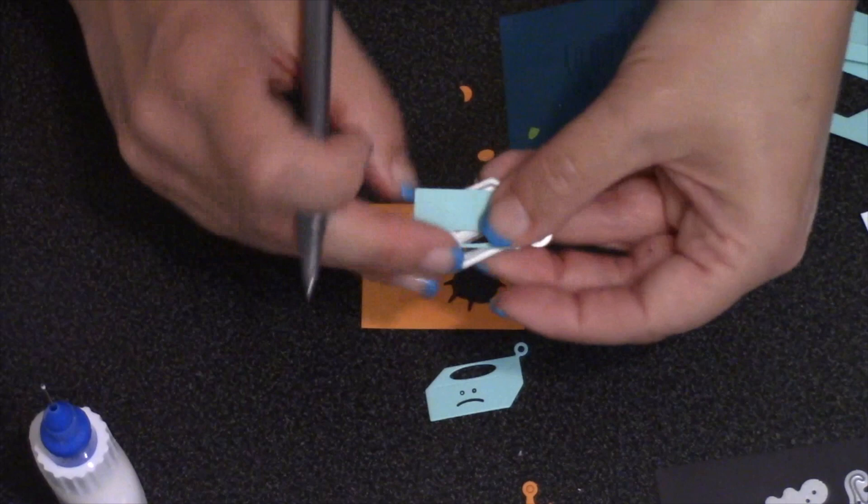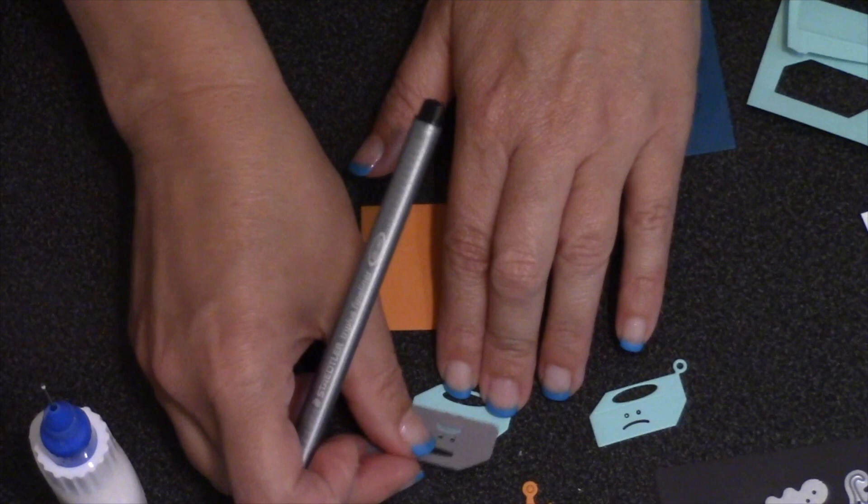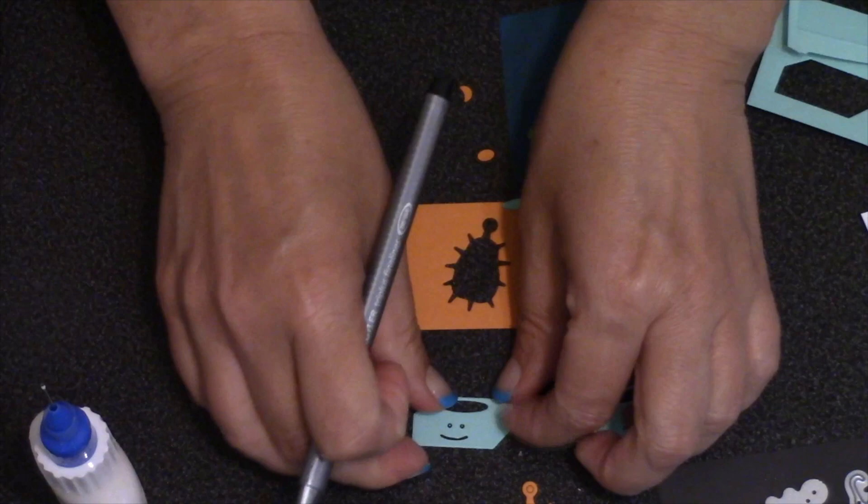If you would like the tissue to have that unhappy look, of course because this person's under the weather, then you'll just use the stencil as is. But you might prefer to have the tissue box be smiling. In that case you do the eyes as normal but then you're just going to flip the die around so that the frown becomes the smile and then stencil that in.